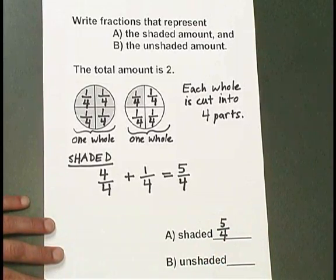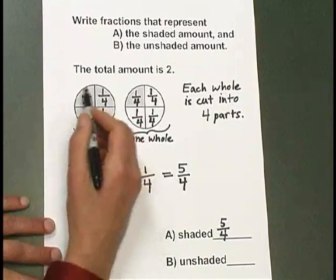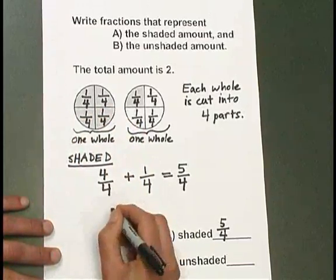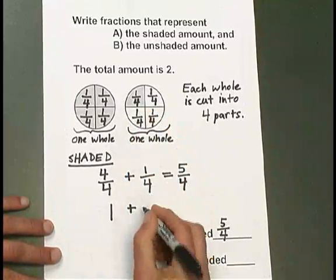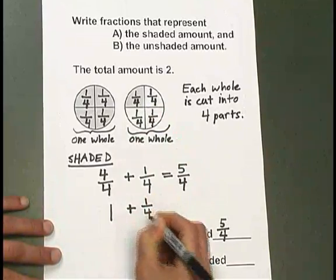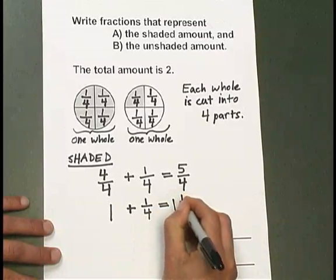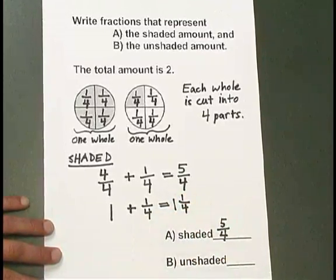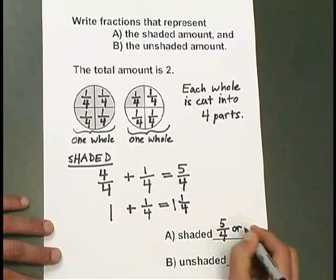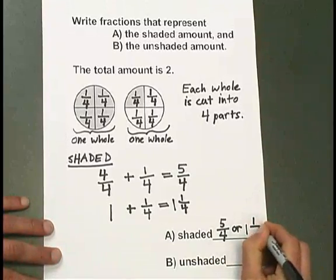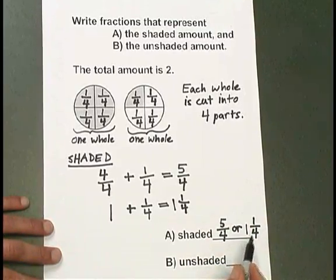There's another way we could look at what the shading describes. Because the entire first whole is shaded, we could have just written 1 for one whole, plus the 1 fourth shaded in the second whole. 1 plus 1 fourth, we write as 1 and 1 fourth. So I could have also written my answer for part A as 1 and 1 fourth. Either 5 fourths or 1 and 1 fourth are acceptable.